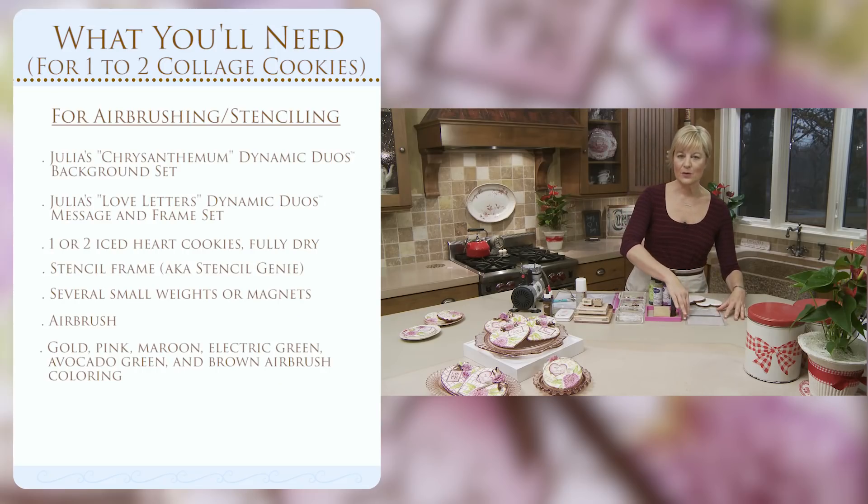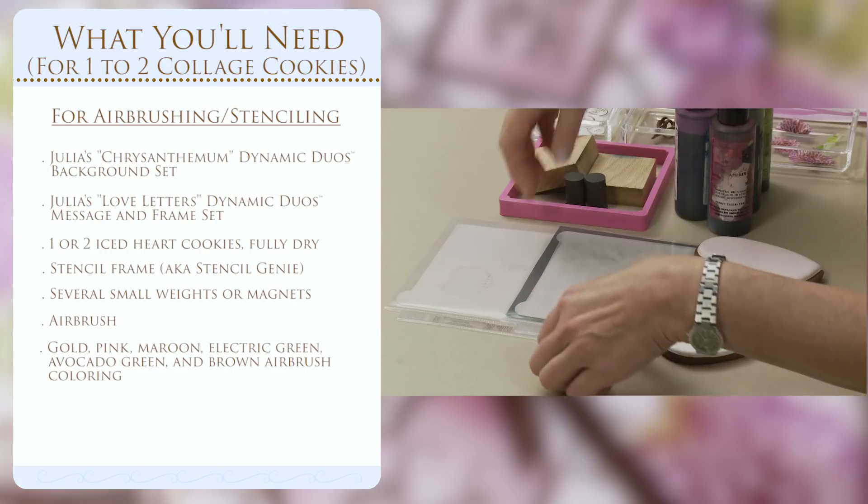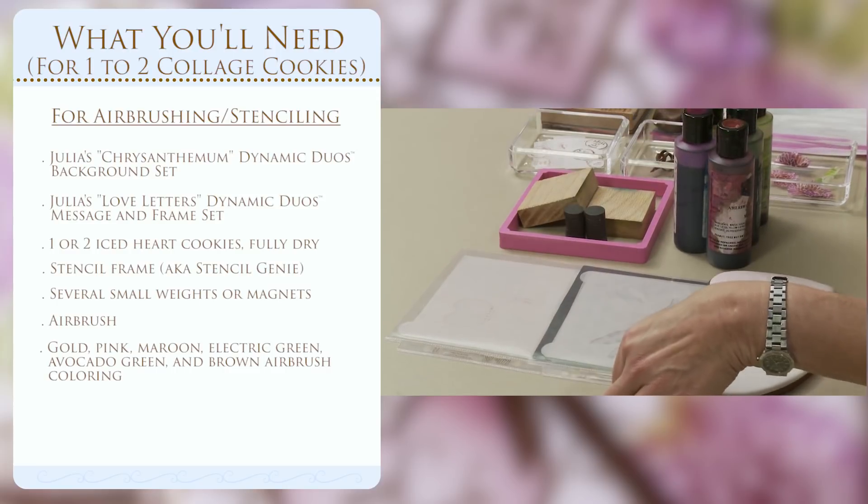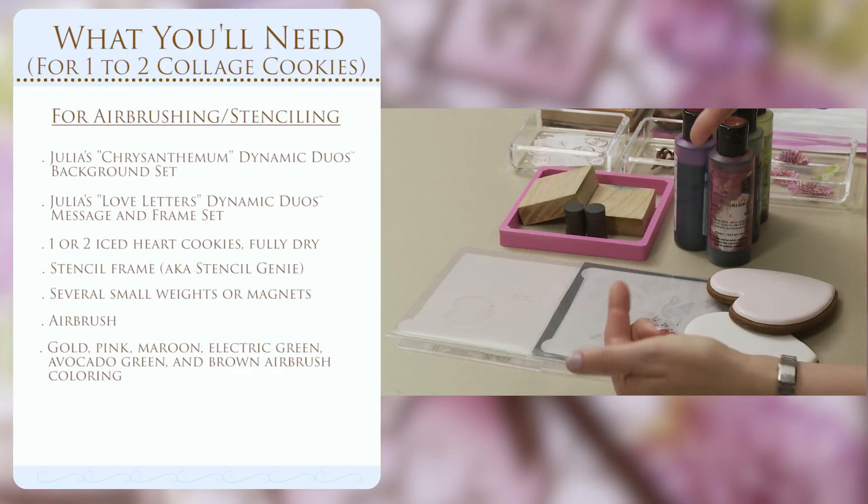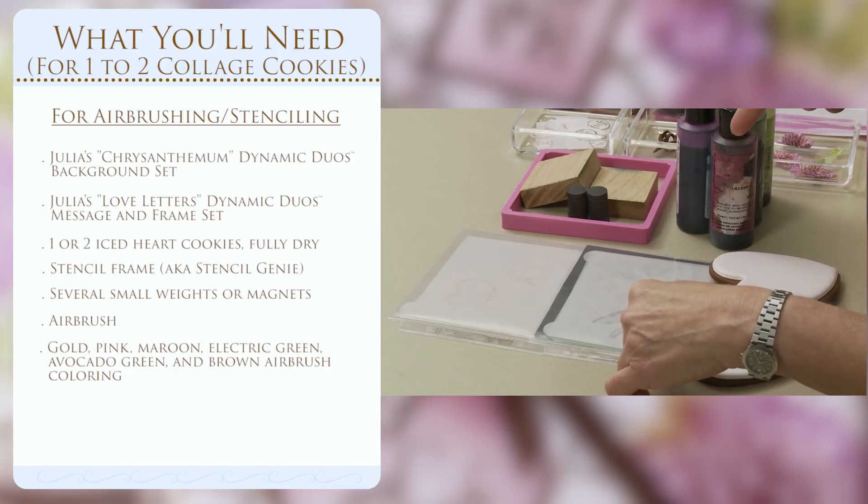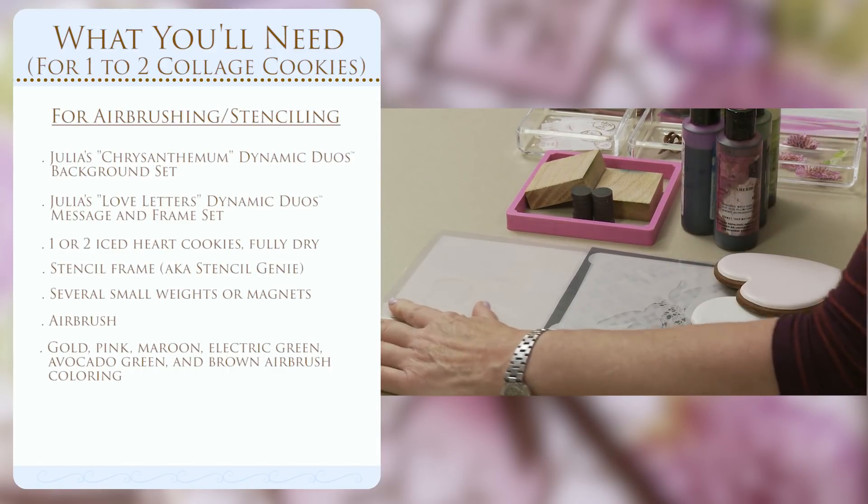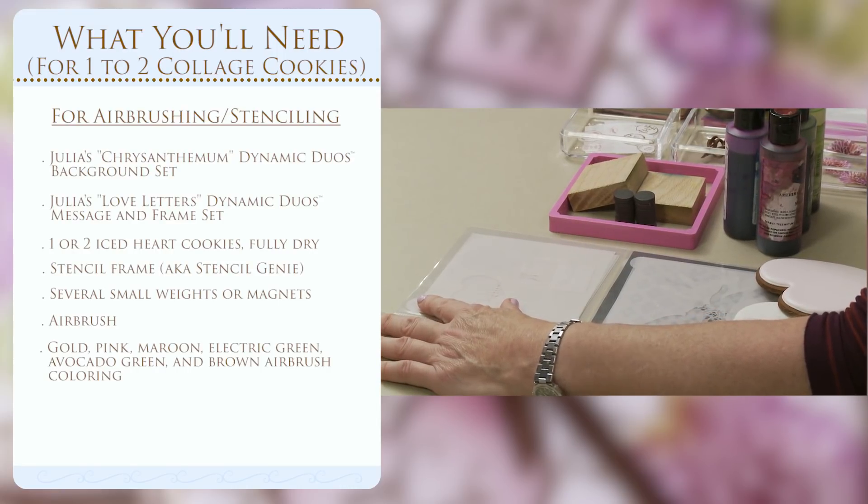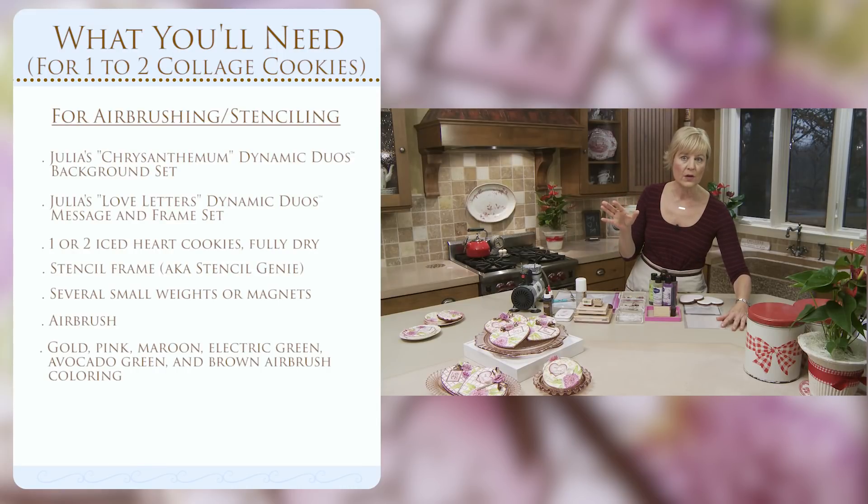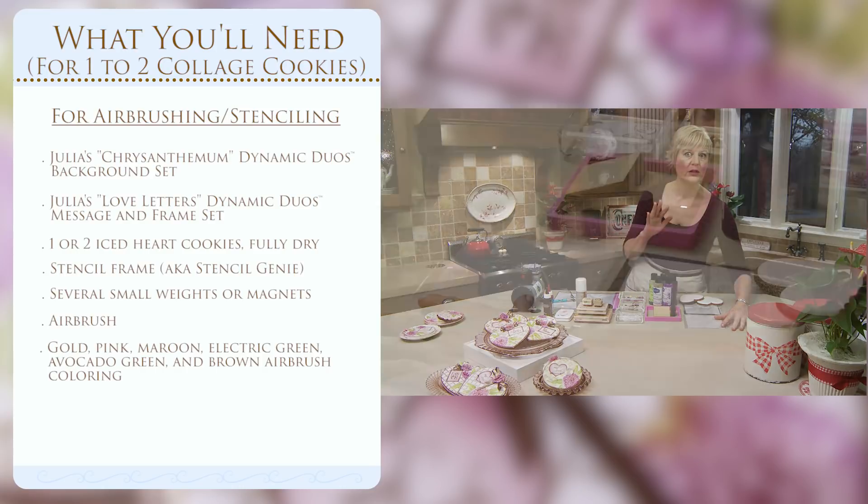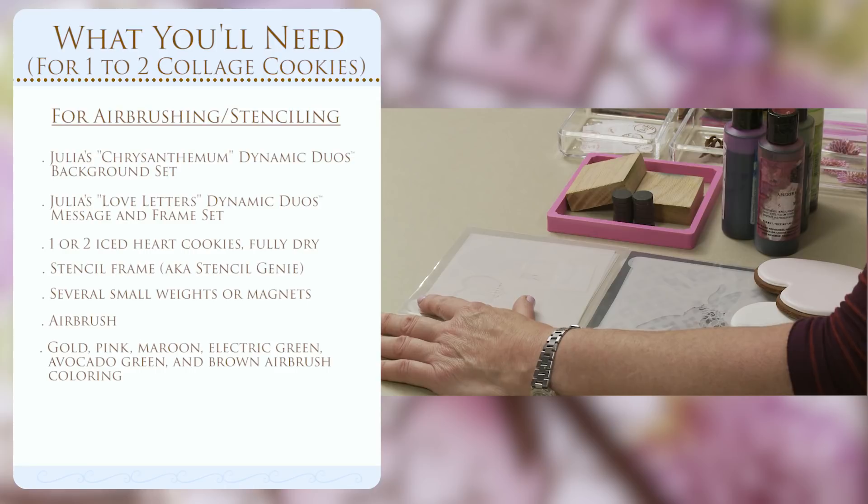So let's talk about what we'll need for this project. So the first thing needed of course as I mentioned are my Dynamic Duo sets and there are two of them. One which contains background and floral elements and I'll unpackage these and get into exactly what you'll find in this particular set in a bit. But you'll need the background foreground elements also the set that contains the message and frames.